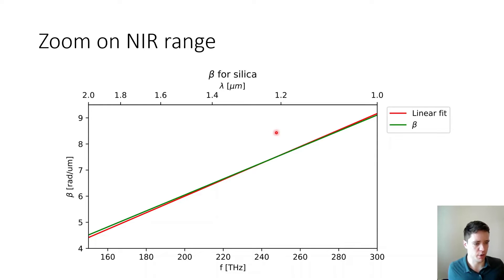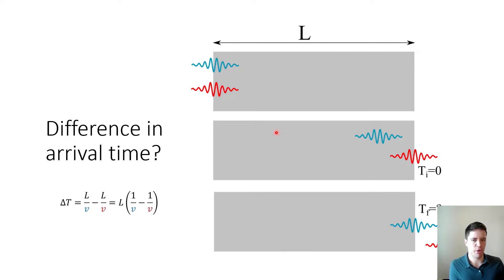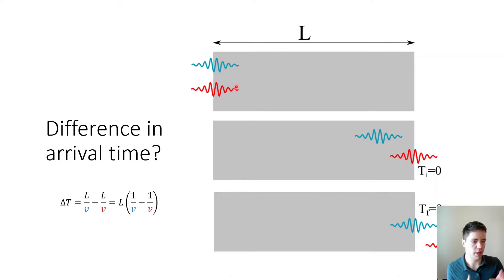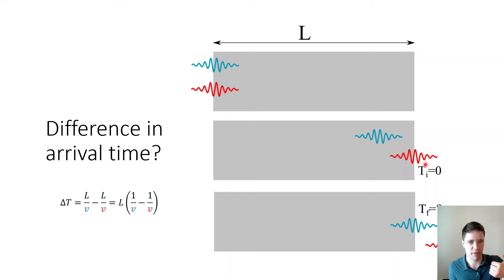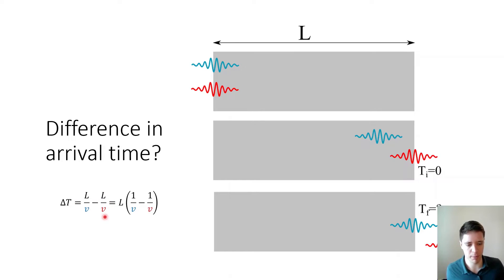A useful question to start the analysis of dispersion is: what determines the difference in arrival time between two pulses propagating through a medium? We can imagine sending two pulses with identical durations but with slightly different carrier frequencies. One must propagate more quickly, so once it reaches the end we start a stopwatch, and when the other arrives we stop it and measure the delay time. The difference in time depends on one over the speed of each pulse — and we need to determine those speeds from the beta values.